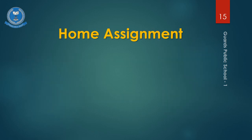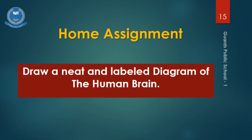For your home assignment, you have to draw a diagram of the human brain, which is on page number five of your science book, first chapter, the Nervous System. All of you must submit this diagram in the WhatsApp group. And if you have any questions regarding any topic, please ask in the WhatsApp group.